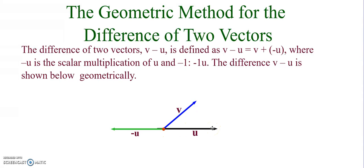So in this case, if I have the initial side of v connected or touching the initial side of u, if I connect the heads, so if I draw this, this is going to be v minus u.